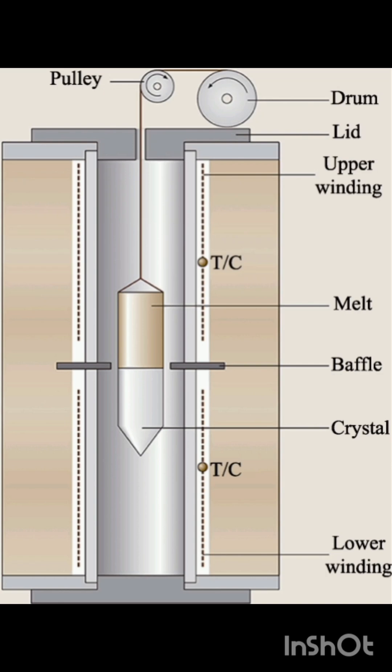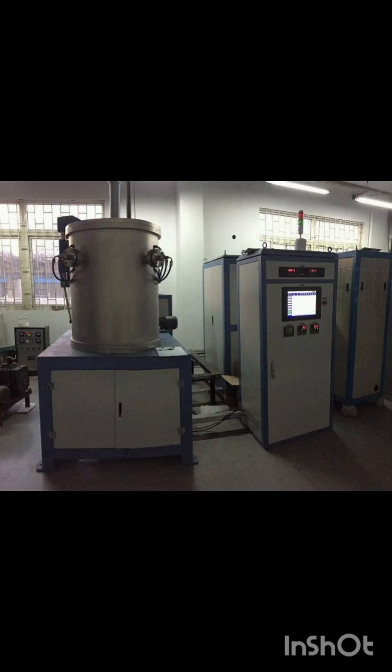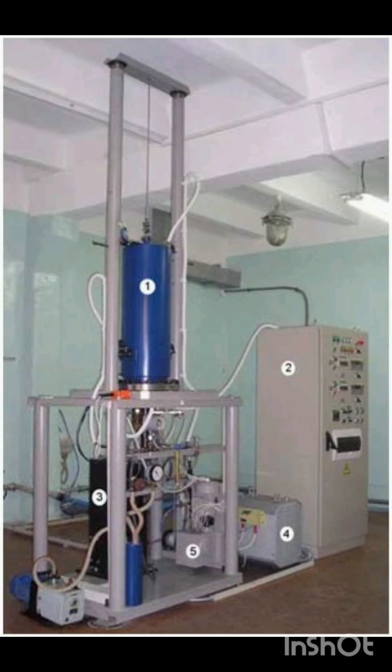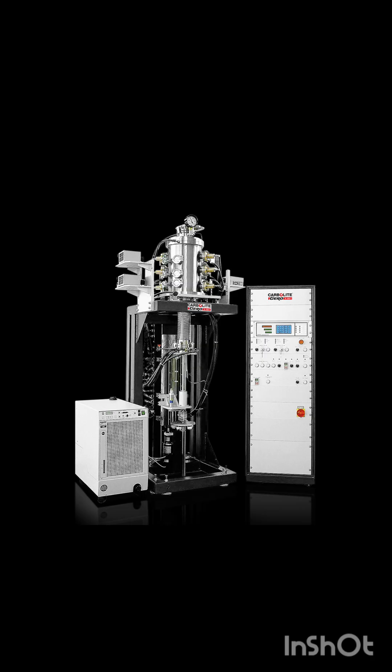The Bridgman method is a crystal growth technique where a material is melted in a crucible and then slowly cooled from one end, causing it to solidify into a single crystal. This process relies on a controlled temperature gradient within a furnace to direct the solidification process.